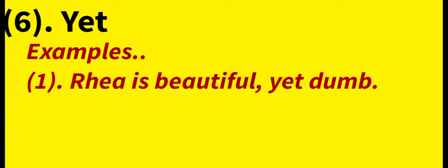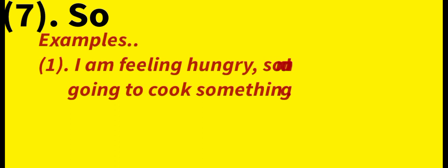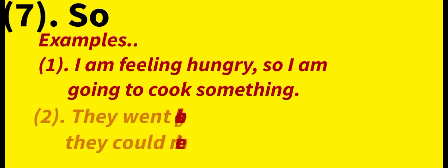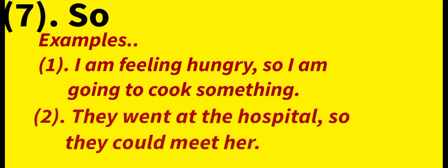The seventh and last coordinating conjunction is 'So.' So means 'therefore' or 'as a result.' Example: 'I'm feeling hungry so I'm going to cook something.' Next example: 'They went to the hospital so they could meet her.' So shows the result or purpose of the action in the first clause.